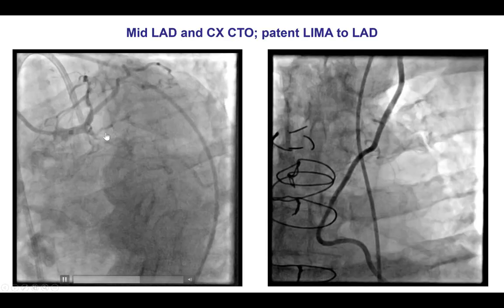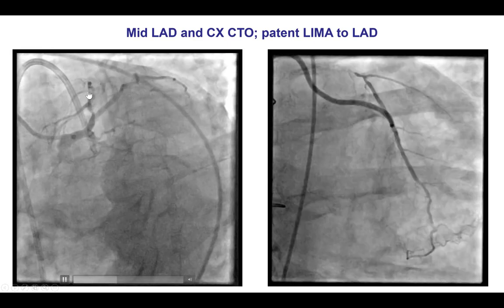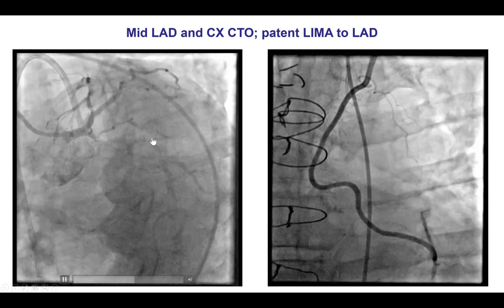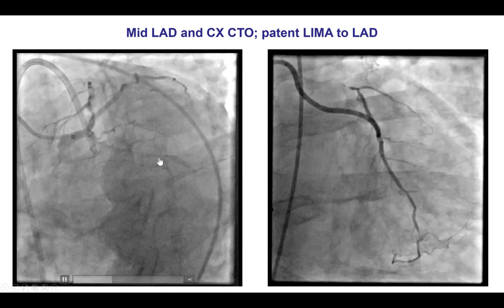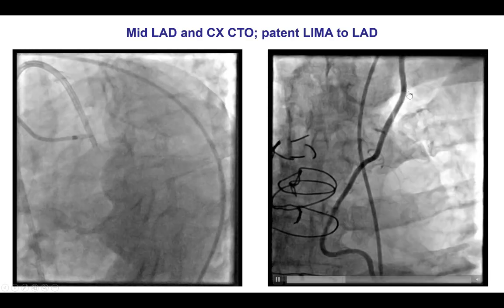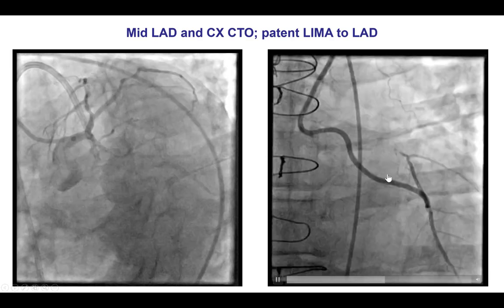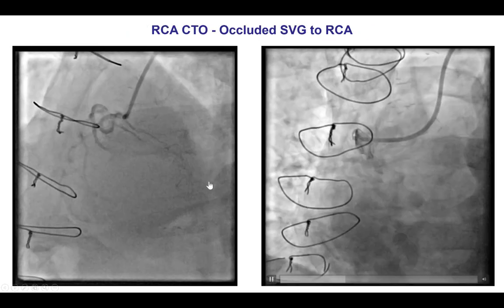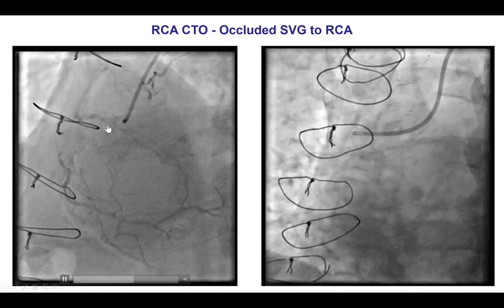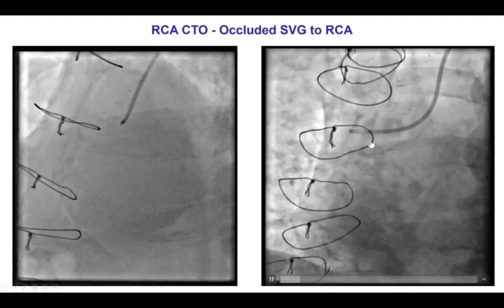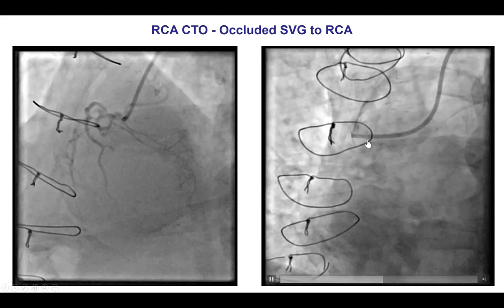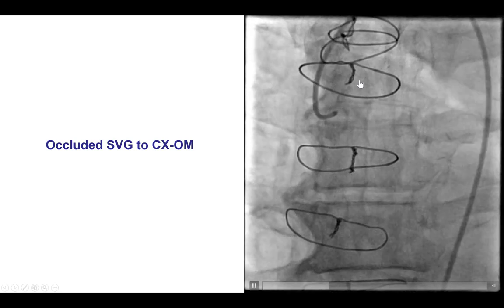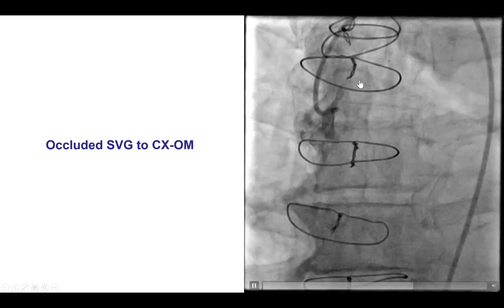His coronary angiogram demonstrated occlusion of the mid-LAD with a large diagonal branch, a CTO of the proximal circumflex, and a patent LIMA to LAD graft with excellent flow. There was a CTO of the right coronary artery with an occluded saphenous vein graft to the right coronary, and there was also an occluded saphenous vein graft to the circumflex.